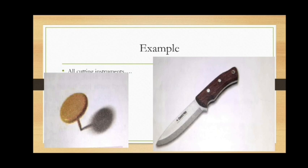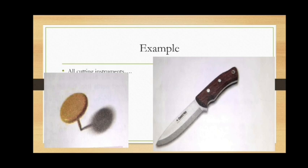For the same reason, a drawing pin is broad from the thumb side but very sharp from the pin side. The broader thumb side reduces pressure on the thumb, but the sharp pin tip increases the pressure on the wooden board, so it can easily penetrate it.